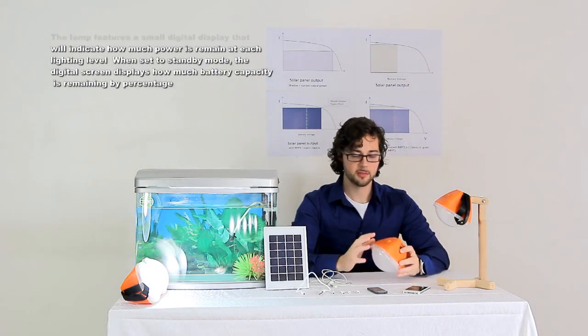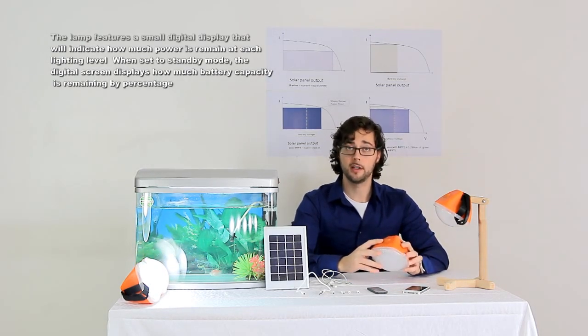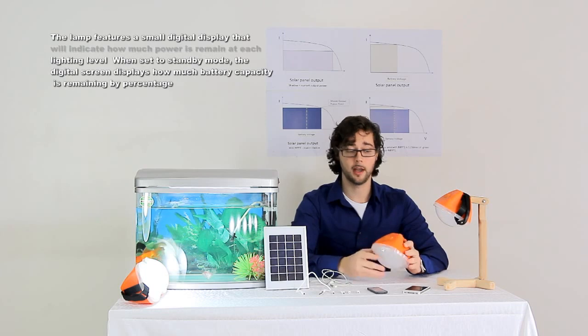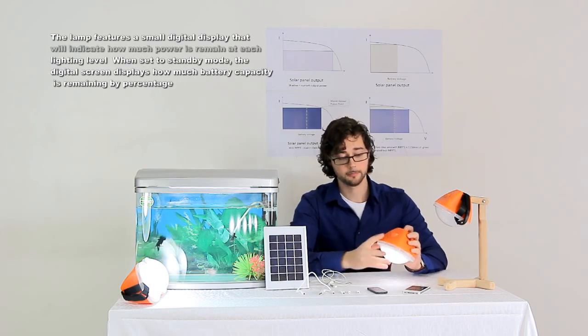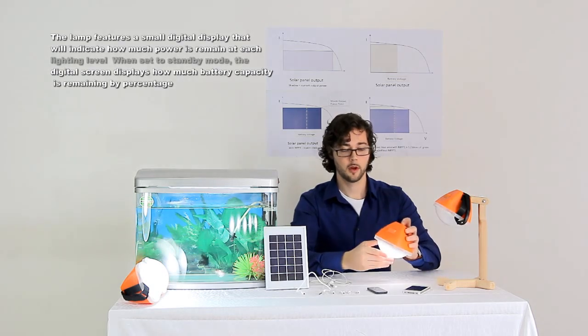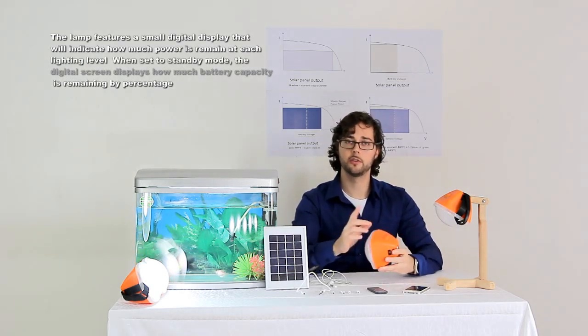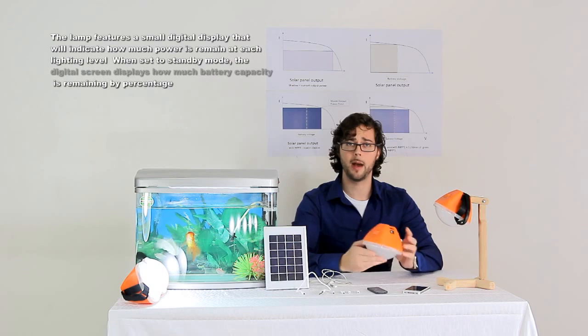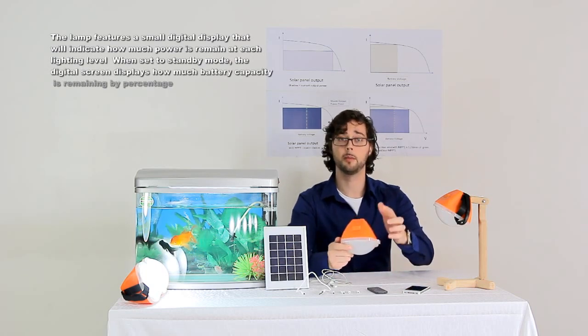The lamp features a small digital display that will indicate how much power is remaining at each lighting level. When set to standby mode, the digital screen displays how much battery capacity is remaining by percentage.